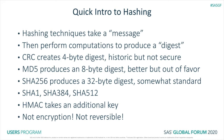MD5 came along a little bit later; it creates an eight-byte digest. Then SHA-256 seems to be somewhat the standard today, and it's a 32-byte digest. There are various variants of SHA, like SHA-1, SHA-384, and SHA-512, but 256 is the one most people tend to use these days. There's another component called HMAC, which takes an additional secret key as part of computation, and it's a public domain algorithm.